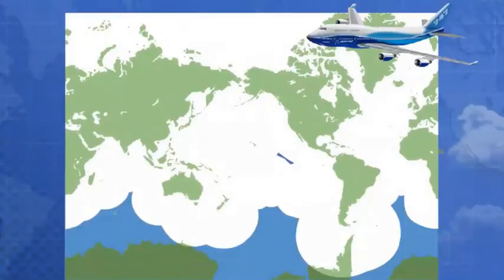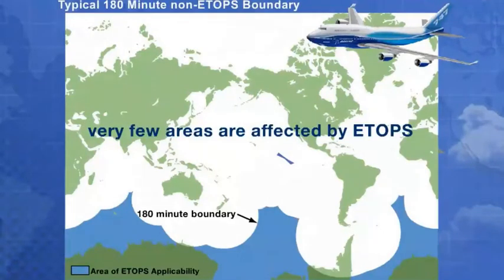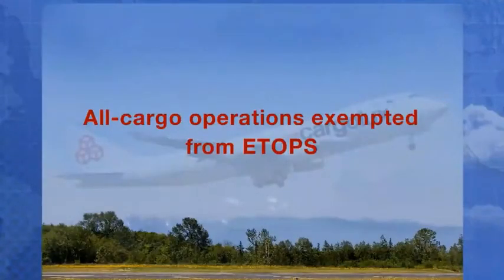Recognizing the sound safety principles of ETOPS, the FAA regulations have been expanded to include passenger airplanes with more than two engines. For passenger airplanes with more than two engines, ETOPS begins at 180 minutes from an adequate airport. Therefore, most areas will remain non-ETOPS for these airplanes. Note that all cargo operations on airplanes with more than two engines are exempt from ETOPS rules.